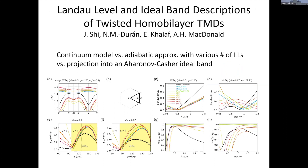I'm Jing Chi from the University of Texas at Austin, in Allan MacDonald's group. In my poster I'll present two works. The first is a follow-up to the preceding talk: for the homobilayer TMD in the adiabatic approximation, we include more and more Landau levels and compare results for band structure bandwidth, magic twist angle, ideal quantum geometry, and so on. The second work is on twisted bilayer hBN where there are two moiré superlattices that interfere to create a moiré-of-moiré system.